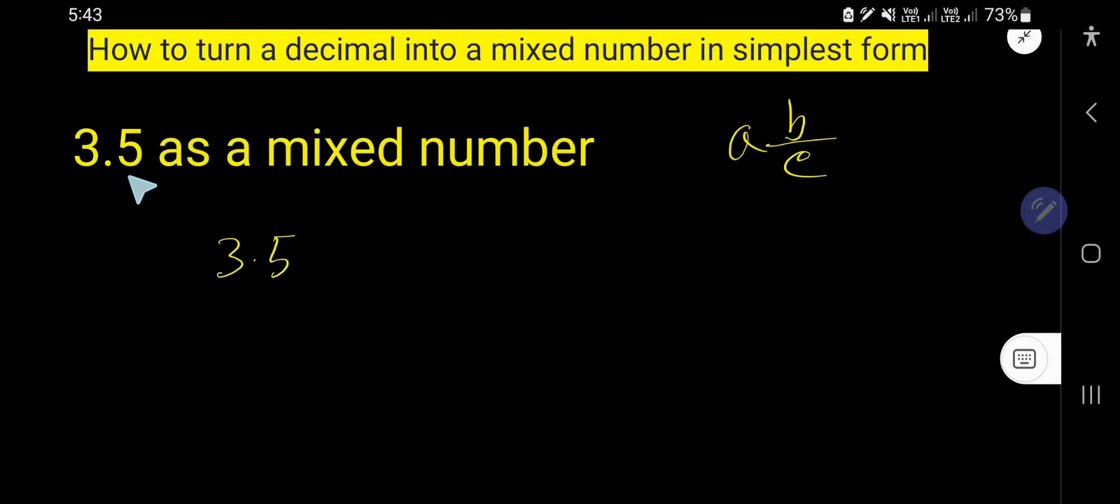How to convert 3.5 decimal number into a mixed number. This is the mixed number - every mixed number has a whole number part and fractional part. Here the fractional part is b by c. So just rewrite the decimal number 3.5.